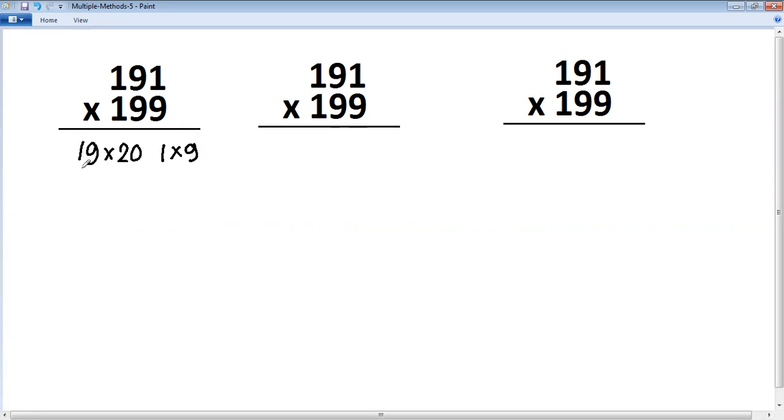So here what you'll do is just multiply by 2. 19 into 2 is 38, and then put this 0, that 0 will remain as it is. 1 into 9 is 9, but we have learned that this you'll write as 09. So final answer is 38009.